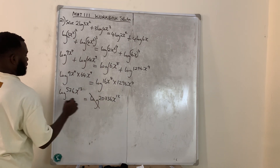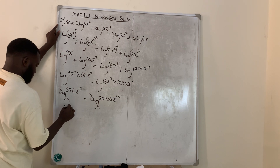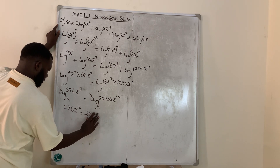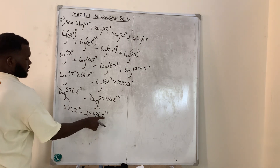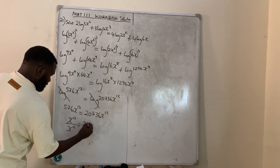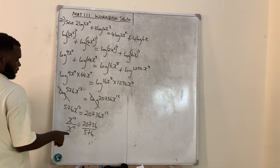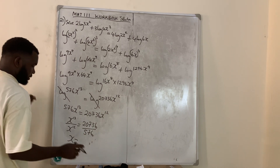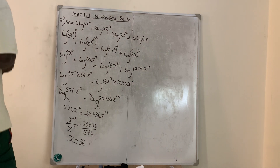We cancel the logs on both sides, giving 576 x raised to power 13 equals 20736 x raised to power 12. Dividing both sides and applying indices — subtract the powers — 13 minus 12 gives 1, so x equals 20736 divided by 576, which simplifies to 36. That is the answer for question number 21.